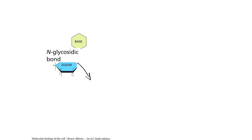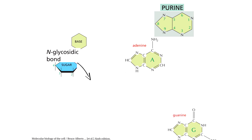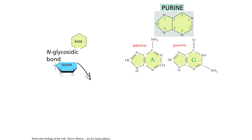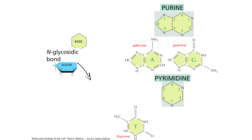The base of a nucleotide is joined covalently in an N-β-glycosyl bond to the first carbon of the pentose. Both DNA and RNA contain major purine bases like adenine and guanine, and two major pyrimidine bases. In both DNA and RNA, those are thymine, cytosine, and uracil.